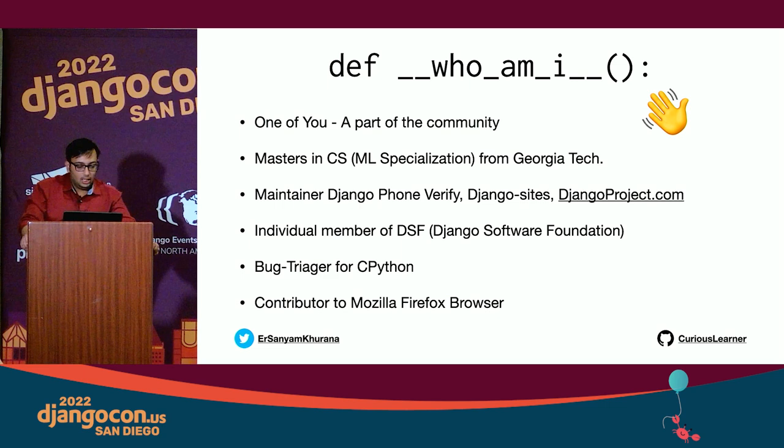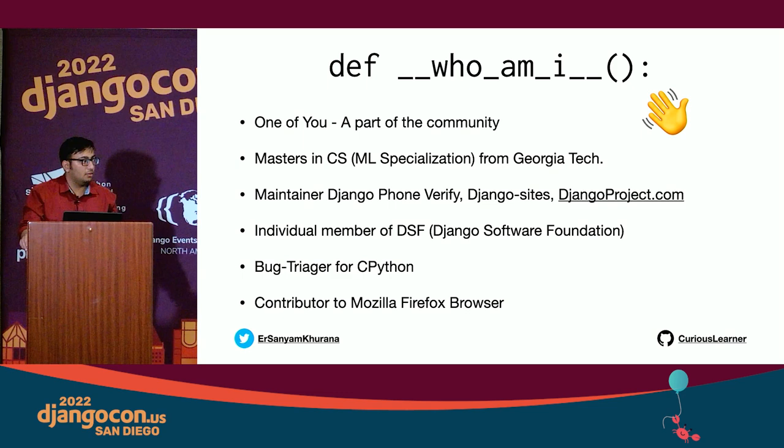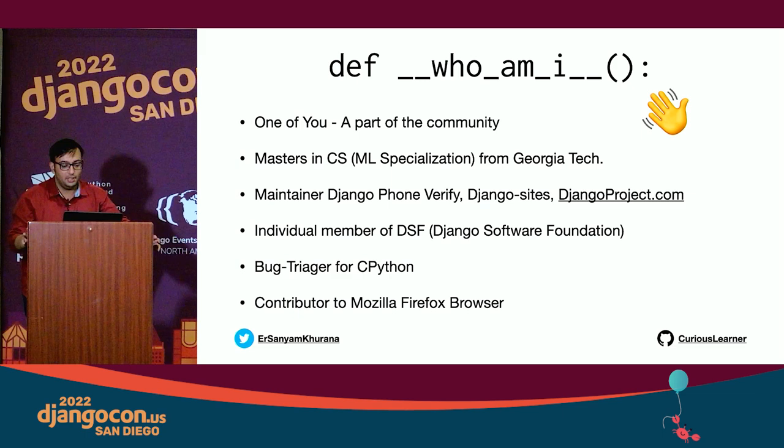Before I begin, I want to tell you that this talk contains examples on MRO in Python. We'll do examples for both the DLR algorithm, which is the old one, and the new C3 linearization algorithm. I want you to pay close attention to the screen because this talk is about building the mental model of multiple inheritance in Python and how MRO works. If you want these slides, I've already tweeted a link on my Twitter.